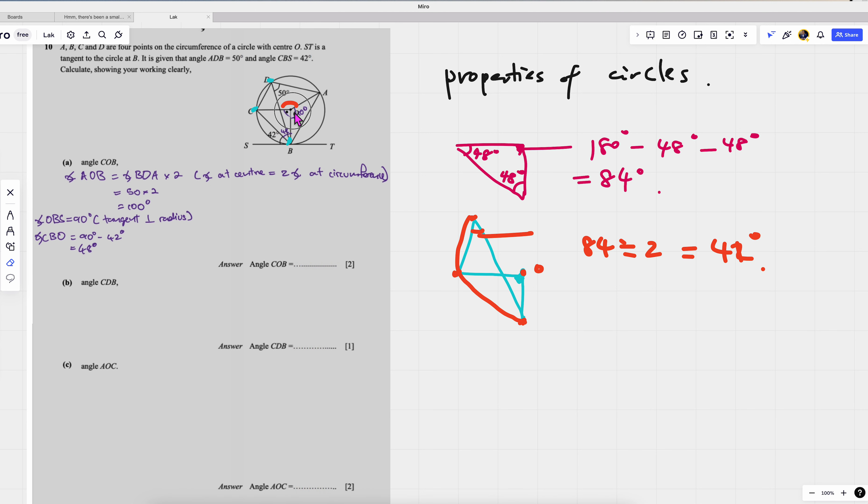Just 360 minus... Yeah. But this is what, 100? Oh, this hundred is given. Yeah. How do you get 100? Because it's angle at circumference and angle at center.